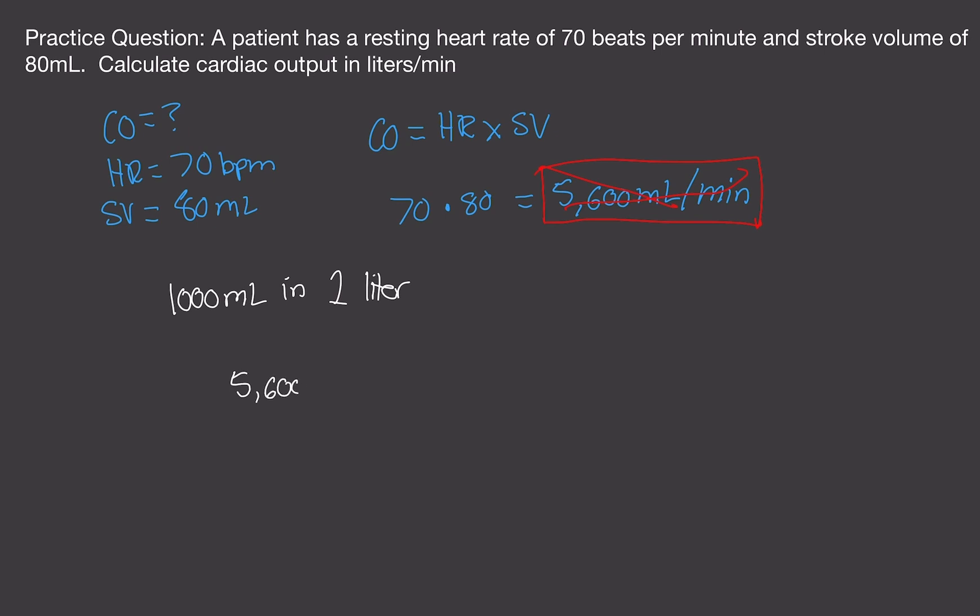So 5,600 milliliters per minute divided by 1,000. So we'll just cancel out the zeros. This is assuming you don't have a calculator because you're usually not given calculators in physiology exams. So now we have an extra zero that we need to get rid of, so this becomes a decimal point. This now is equal to 5.6 liters per minute. And this is our answer.